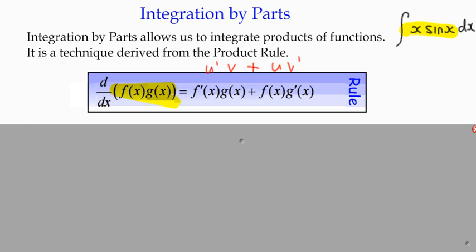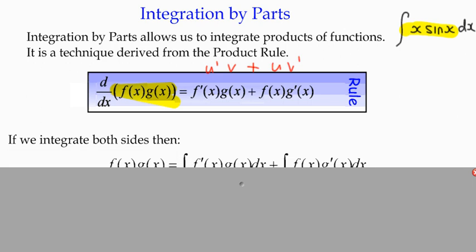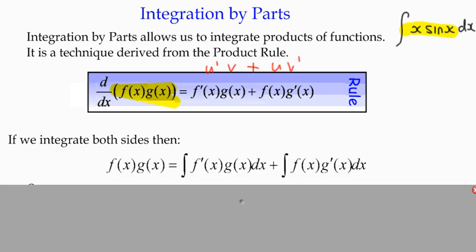So what we can do is we can think about integrating that expression. And if we do that, then because the left-hand side is the derivative of f of x, g of x, to integrate a derivative means we just return back to the original function. So we're left on the left-hand side with f of x, g of x, and we can integrate the right-hand side in two parts because it's split up into an addition of terms.